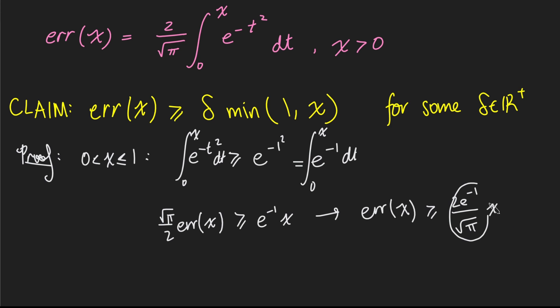And this thing here is going to be our constant delta. So this delta here is going to be 2e to the negative 1 over root pi, which is just some small positive constant.